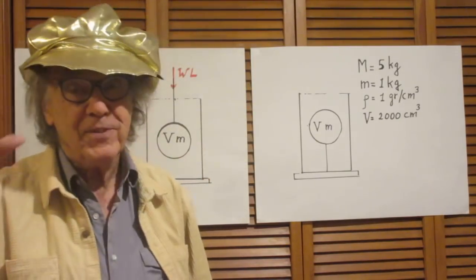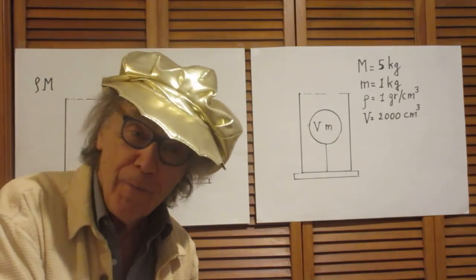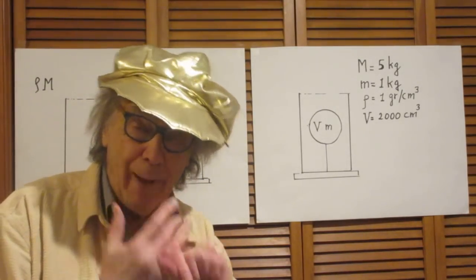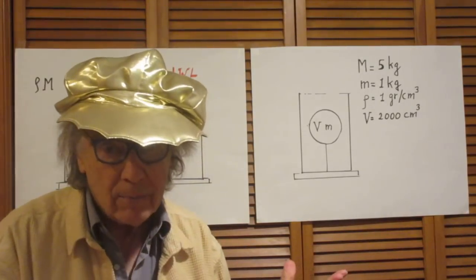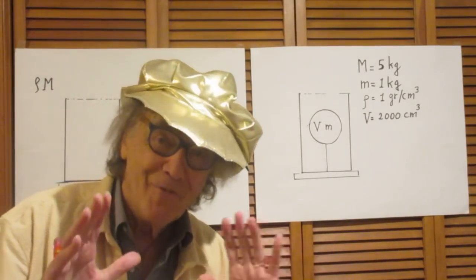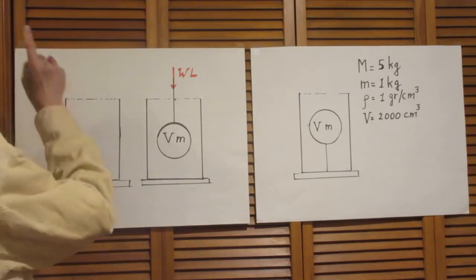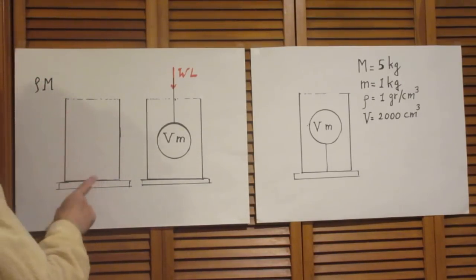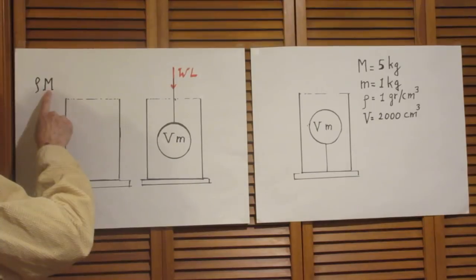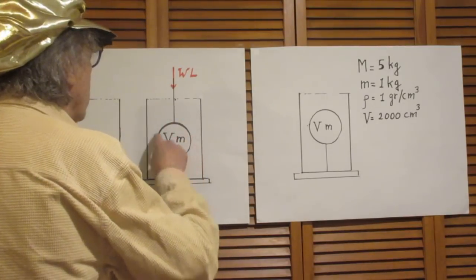I have never in my life seen a bathroom scale calibrated in Newtons. I have lived 30 years in Europe and 42 years in the United States. In Europe, all bathroom scales are calibrated in kilograms; in the United States, in pounds — that's even worse. But kilograms is fine, so a European bathroom scale would simply indicate that the weight is capital M kilograms.